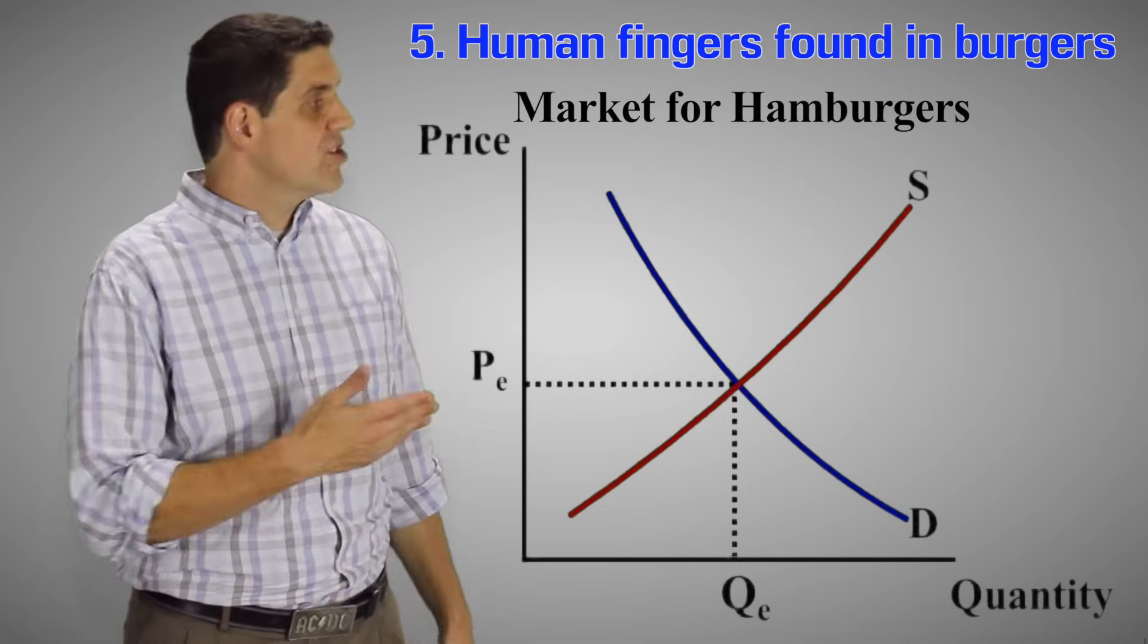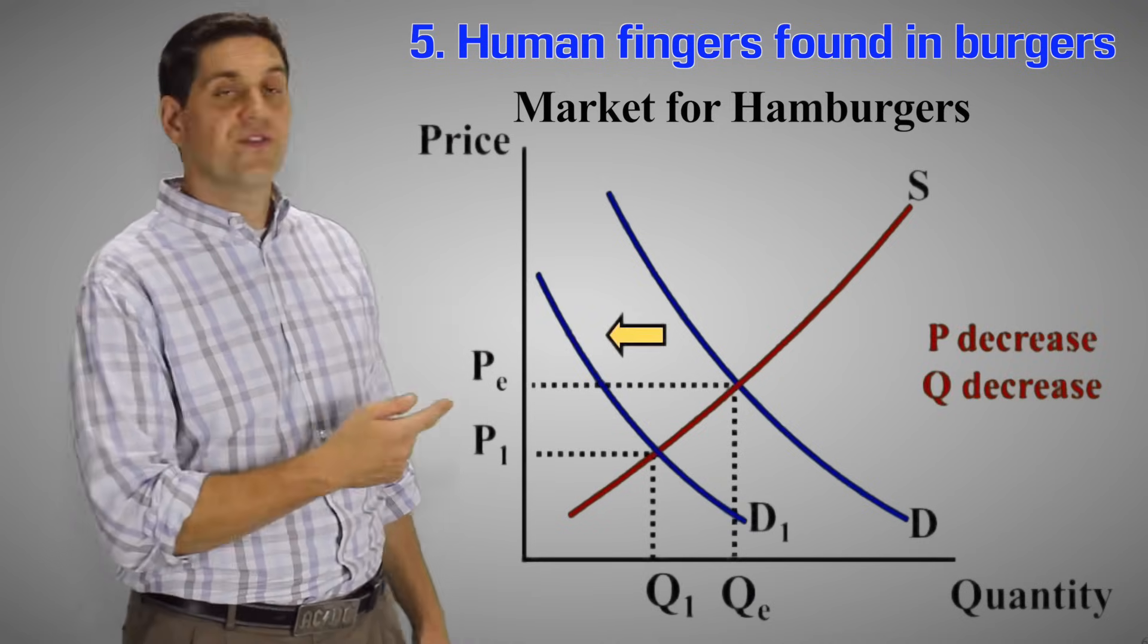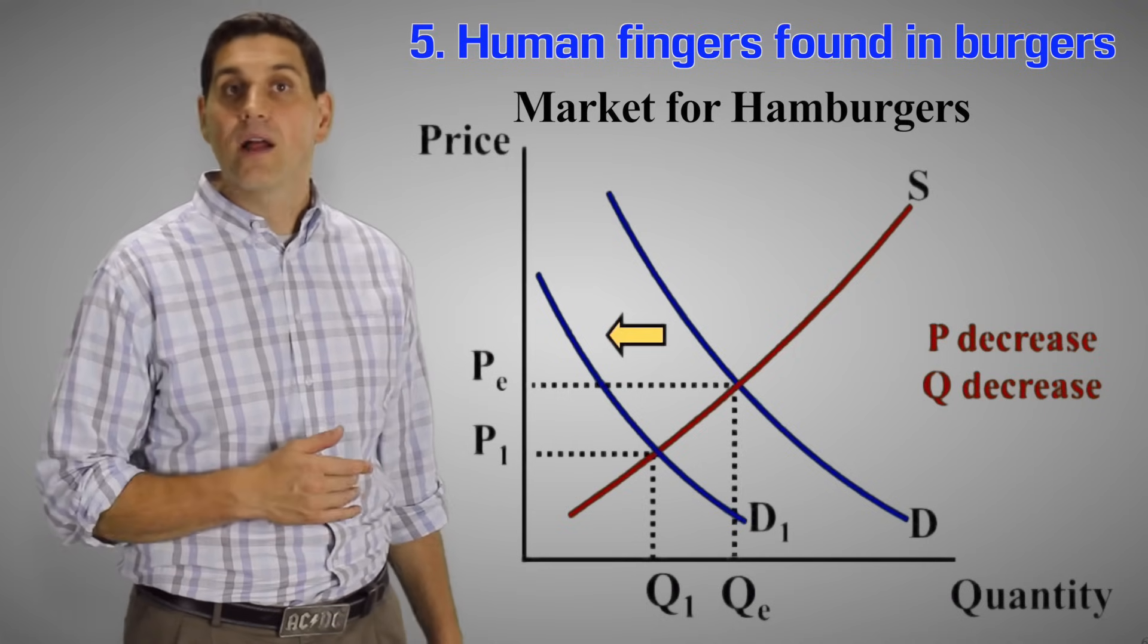And for the last one, if there's human fingers found in many restaurants, that's going to decrease the demand for hamburgers, right? So the demand shifts to the left, price goes down, and quantity goes down.